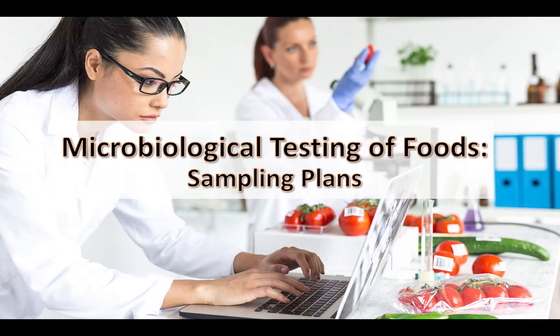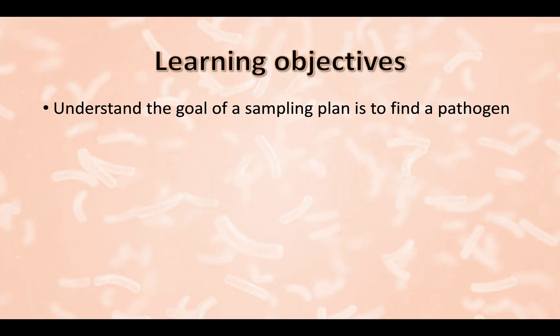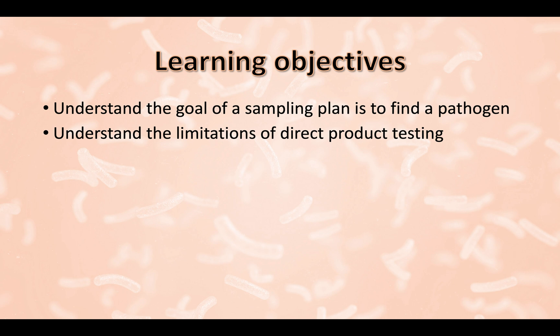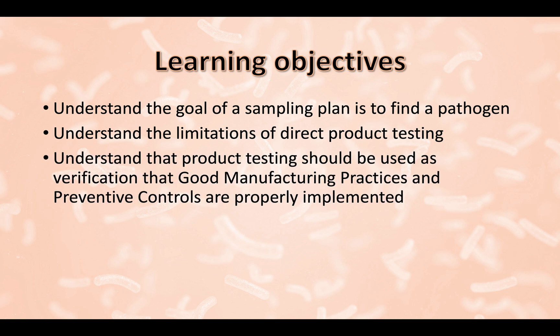This is the module on microbiological testing of foods, and this lecture covers microbiological test sampling plans. This presentation will cover the design of sampling plans and limitations of direct product testing. It will emphasize that a well-designed sampling plan should aim to find a pathogen, and that direct product testing works well as routine verification that good manufacturing practices and preventive controls are properly implemented.